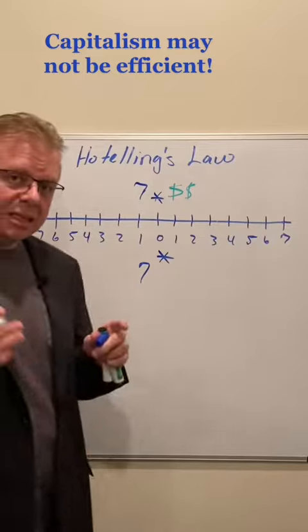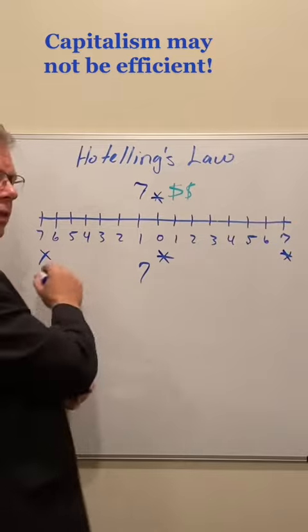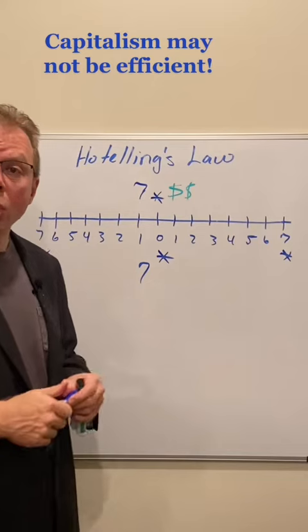But this isn't the most efficient for society, because these guys down here at the end still have to come all the way into the middle in order to get that ice cream cone. What would be more efficient?